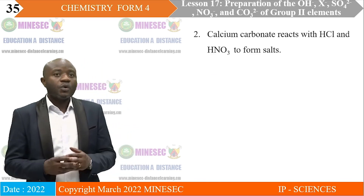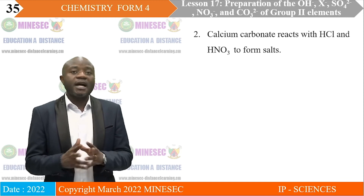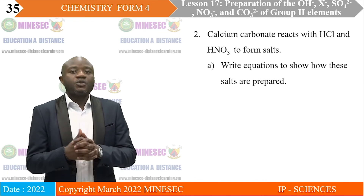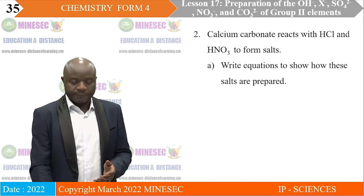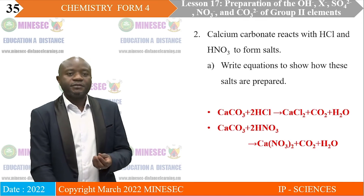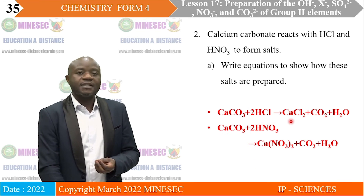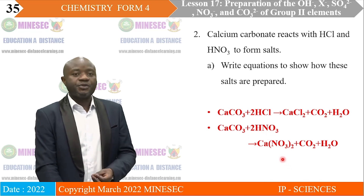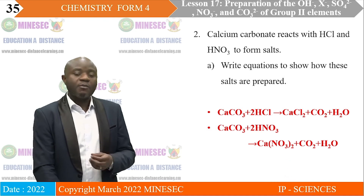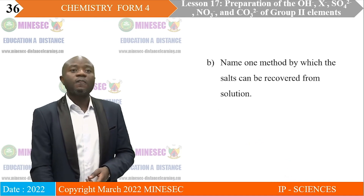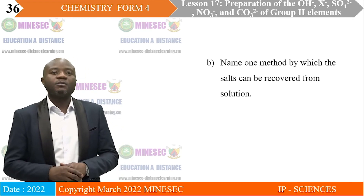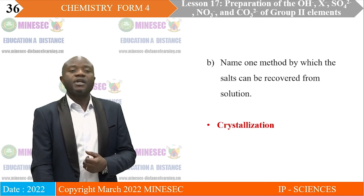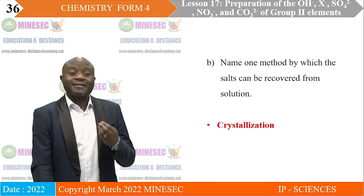Question 2: Calcium carbonate reacts with hydrochloric acid and nitric acid to form salts. A. Write equations: calcium carbonate reacts with hydrochloric acid to produce calcium chloride; calcium carbonate also reacts with nitric acid to produce calcium nitrate. During these reactions, carbon dioxide is released and water is also formed. B. Name one method by which these salts can be recovered from solution. These salts, which are soluble in water, can be recovered from solution by crystallization.